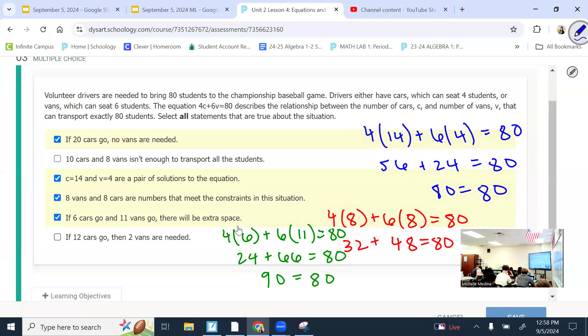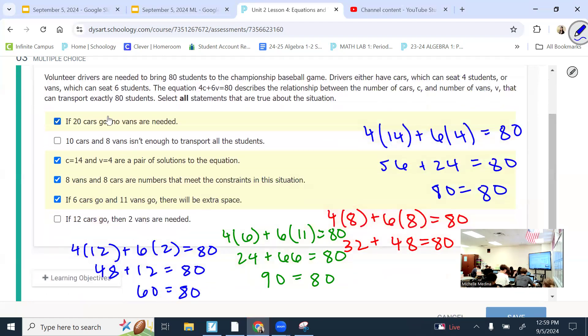And lastly, if 12 cars go, 2 vans are needed. So, 4 times 12 plus 6 times 2. 4 times 12 is 48. 6 times 2 is 12. Does that equal 80 when I add them? It equals 60. So, I would need more vans than just 2. So, I would just pick these 4. It could be shuffled on your screen. So, don't just blindly pick. You would have to pick all 4 of these. No others in order for it to mark it completely right.